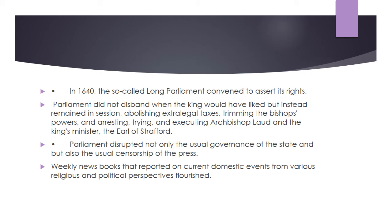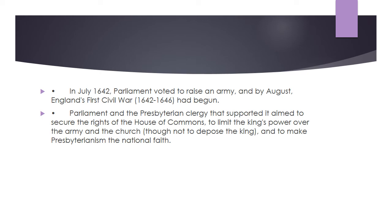In 1640, the so-called Long Parliament convened to assert its rights. Parliament did not disband when the king would have liked, but instead remained in session, abolishing extra-legal taxes, trimming the bishops' powers, trying and executing Archbishop Laud and the king's minister the Earl of Strafford. Parliament disrupted not only the usual governance of the state but also the usual censorship of the press. Weekly newsbooks that reported on current domestic events from various religious and political perspectives flourished. In July 1642, Parliament voted to raise an army, and by August, England's first civil war, 1642–1646, had begun.